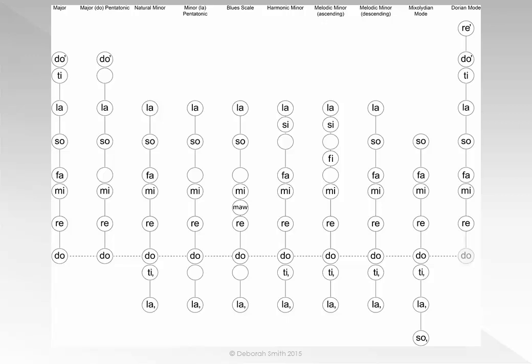These tone ladders show the notes spaced correctly. For example, DO to RE have a gap in between them because they are a whole tone or a major second apart. However, MI to FA does not have a gap between them because these two notes are only a semitone apart, or a minor second, and so on.